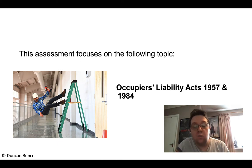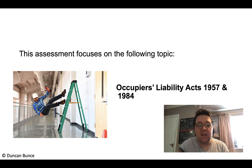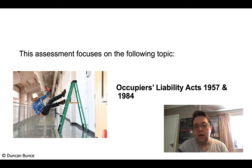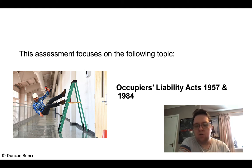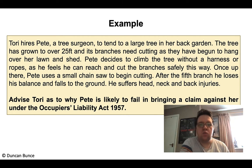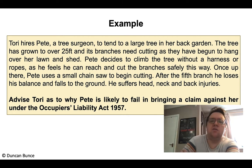Hello legal eagles and welcome to what's going to be our second assessment for Unit 2 taught law on the AQA specification. We're going to be looking at the topics we've previously done — Occupiers Liability Acts 1957 and 1984 — and these are going to be two 10-mark questions. We need some practice on the shorter ones, so I have written a scenario for both of these acts.